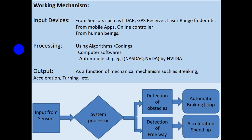As output, it gives mechanical functions such as braking, acceleration, turning, etc. For example, when the driverless vehicle is on the road, it gets information from input sensors such as GPS and laser range finder. It goes to the system processor. If an obstacle is detected on the road, the automatic braking system will automatically activate. And if there is a free way ahead, acceleration will activate automatically.